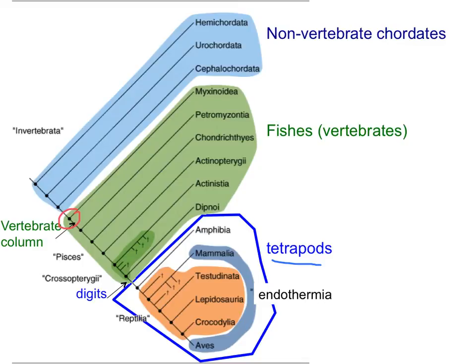What about the presence of digits? Digits first appear in the ancestor of all tetrapods. Amphibians, mammals, reptiles, and birds all originally had five digits in their hands and forelimbs. This is something all tetrapods have, inherited from their common ancestor, and it is unique to them because fish do not have five digits — fish have fins. So having five digits is a synapomorphy of tetrapods.